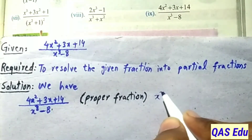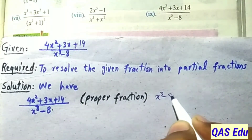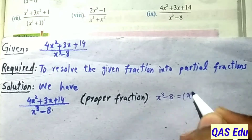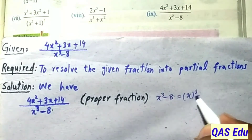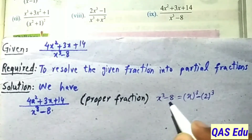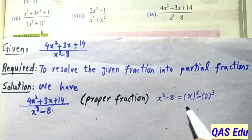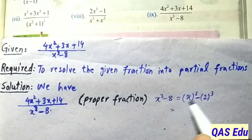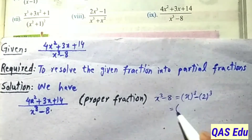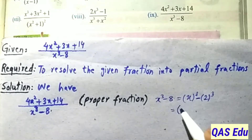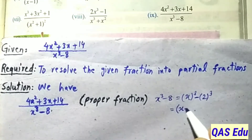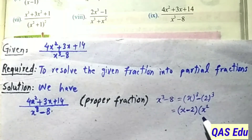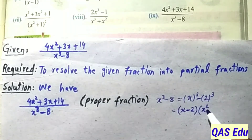The denominator is x³ - 8. We recognize this as a³ - b³ form, where 2³ = 8. Applying the formula a³ - b³ = (a - b)(a² + ab + b²), where a = x and b = 2.